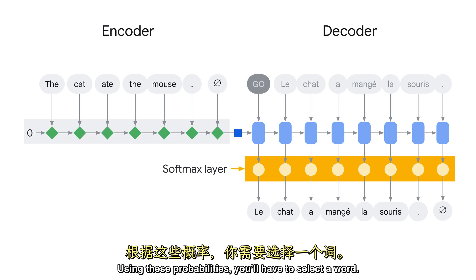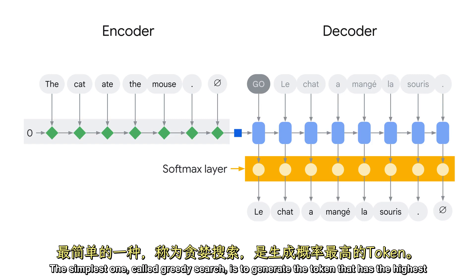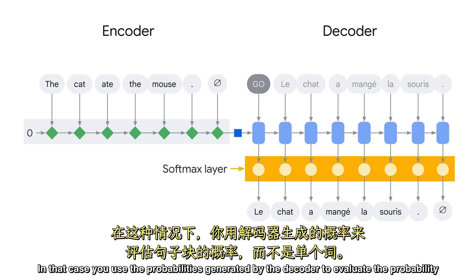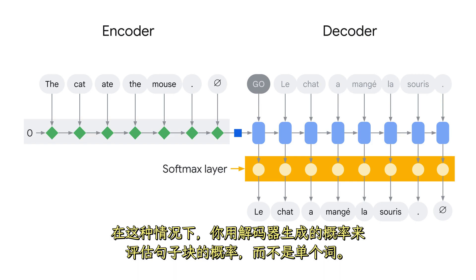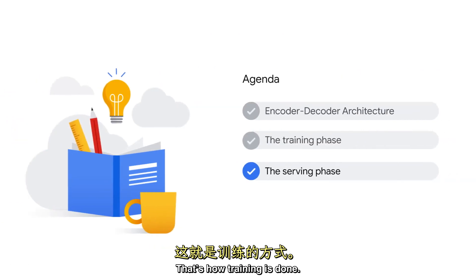Using these probabilities, you'll have to select a word, and there are several approaches for that. The simplest one, called greedy search, is to generate the token that has the highest probability. A better approach that produces better results is called beam search. In that case, you use the probabilities generated by the decoder to evaluate the probability of sentence chunks rather than individual words, and you keep at each step the most likely generated chunk. That's how training is done.